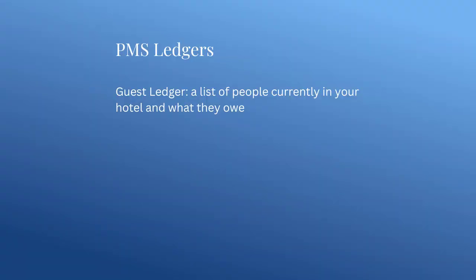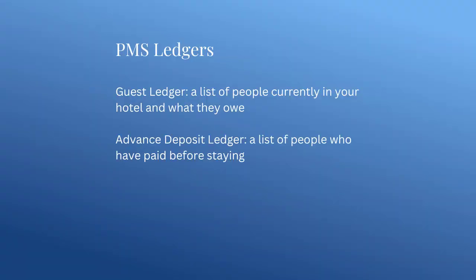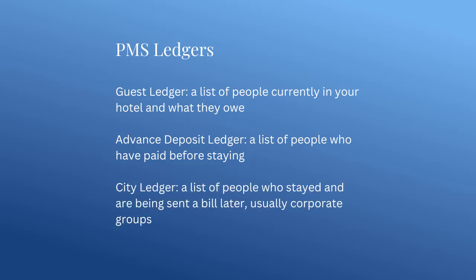Remember, your hotel ledgers — like the guest ledger, a list of people currently in your hotel and what they owe; your advanced deposit ledger, a list of people who've paid before staying; and your accounts receivable or city ledger, a list of people who already stayed and are being sent a bill later, usually corporate groups — must all be part of your PMS. They capture crucial data that goes into your financial statements.